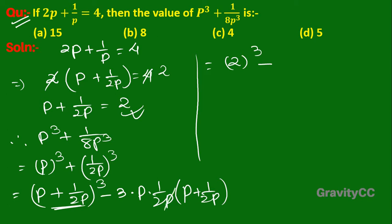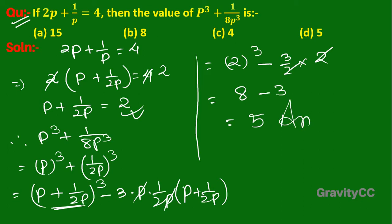The p terms cancel, giving 3/(2) × 2, so the p cancels and we get 2q = 8 − 3 = 5. So option (5) is the correct answer.